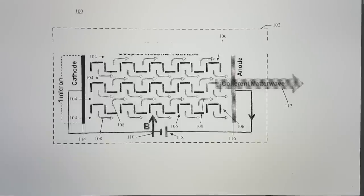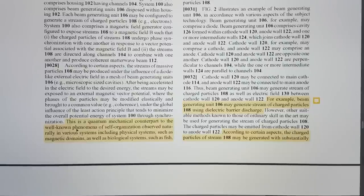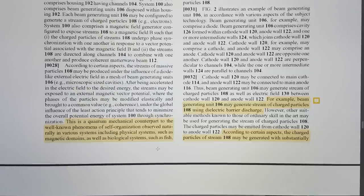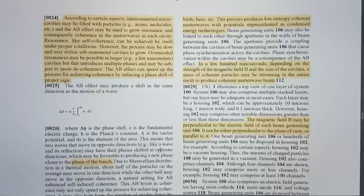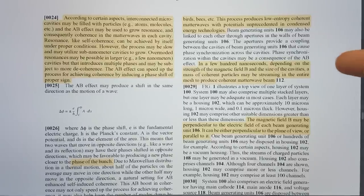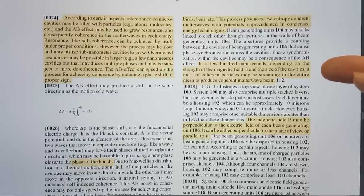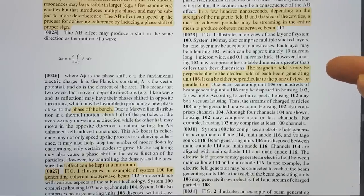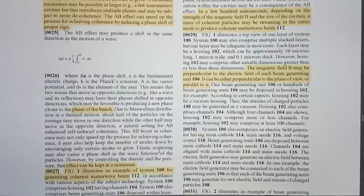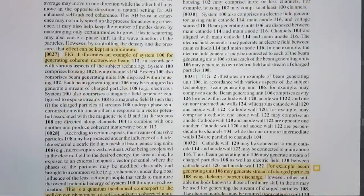According to certain aspects, interconnected microcavities may be filled with particles, atoms, molecules, etc., and the AB effect may be used to grow resonance and consequently coherence in the matter waves in each cavity. Resonance, like self-coherence, can be achieved by itself under proper conditions. However, the process may be slow and may utilize sub-nanometer cavities to grow. Over-moded resonances may be possible in larger, a few nanometers cavities, but that introduces multiple phases and may be subject to more decoherence. The AB effect can speed up the process for achieving coherence by inducing a phase shift of proper sign.